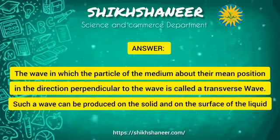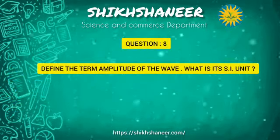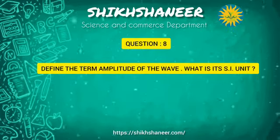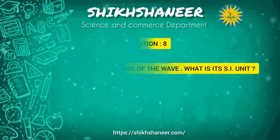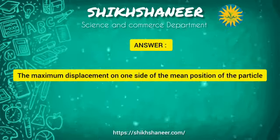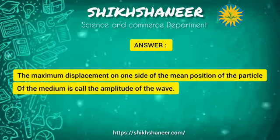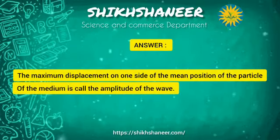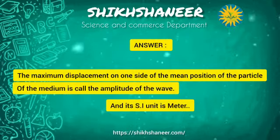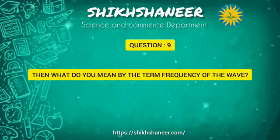Define the term amplitude of a wave and state its SI unit. The maximum displacement on one side of the mean position of a particle of the medium is called the amplitude of the wave. Its SI unit is the meter.